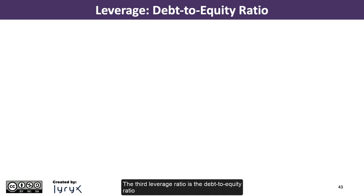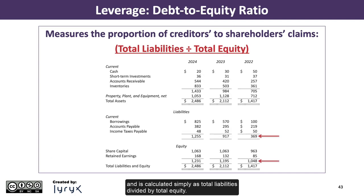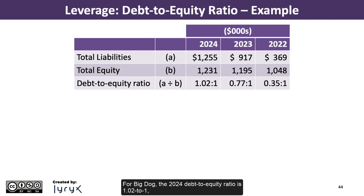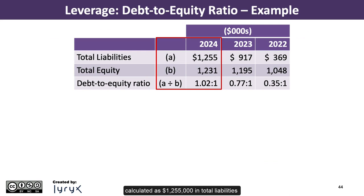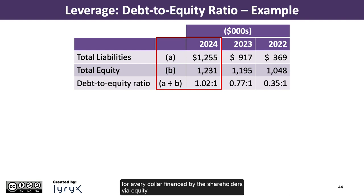The third leverage ratio is the debt-to-equity ratio, which measures the proportion of creditors to shareholders' claims and is calculated as total liabilities divided by total equity. For Big Dog, the 2024 debt-to-equity ratio is 1.02 to 1, calculated as $1,255,000 in total liabilities divided by $1,231,000 in total equity. We generally report this as a ratio rather than a percentage. This means that for every dollar financed by shareholders via equity, Big Dog is financing $1.02 through creditors.